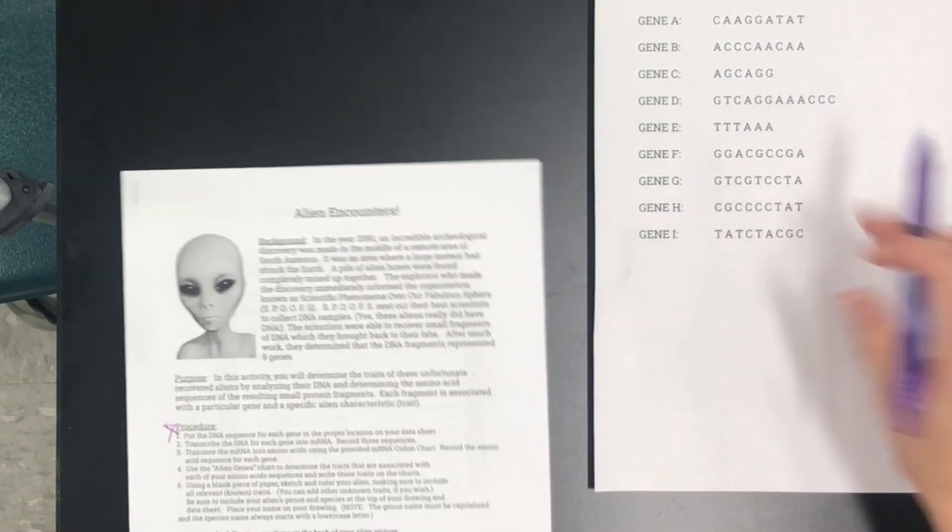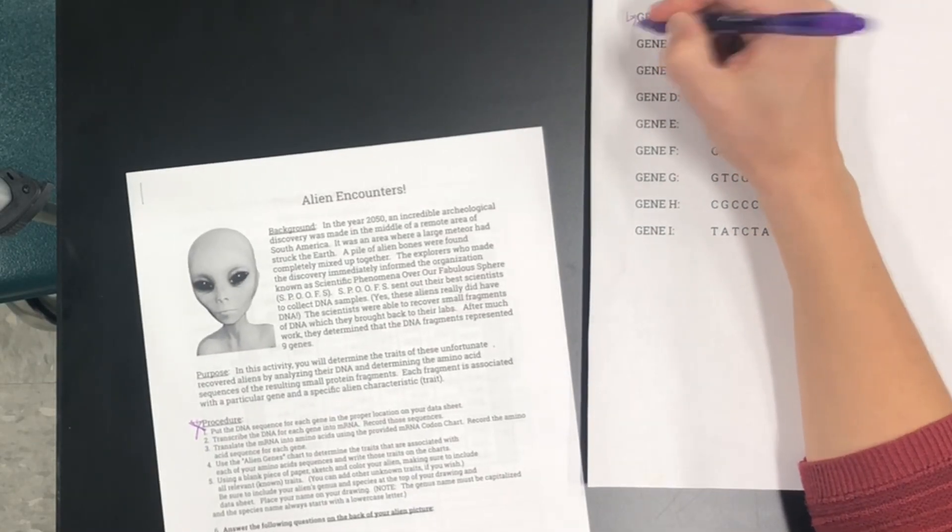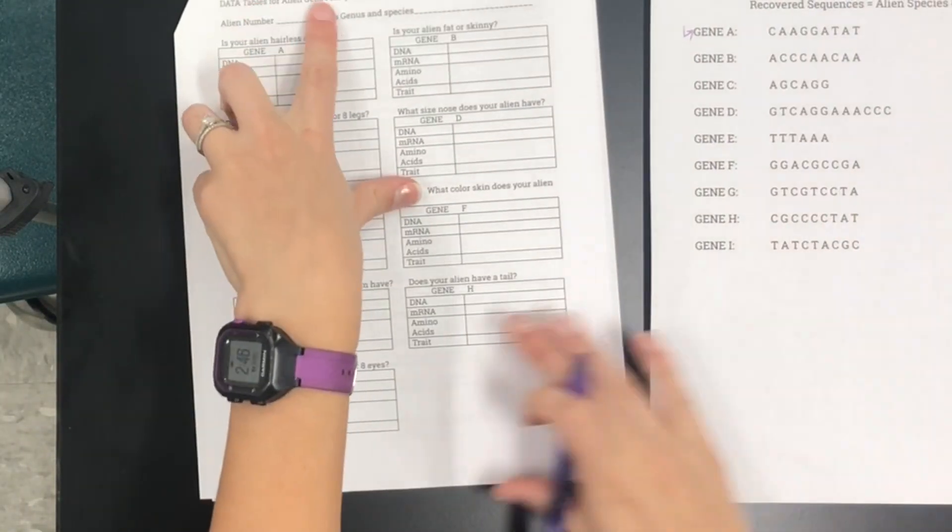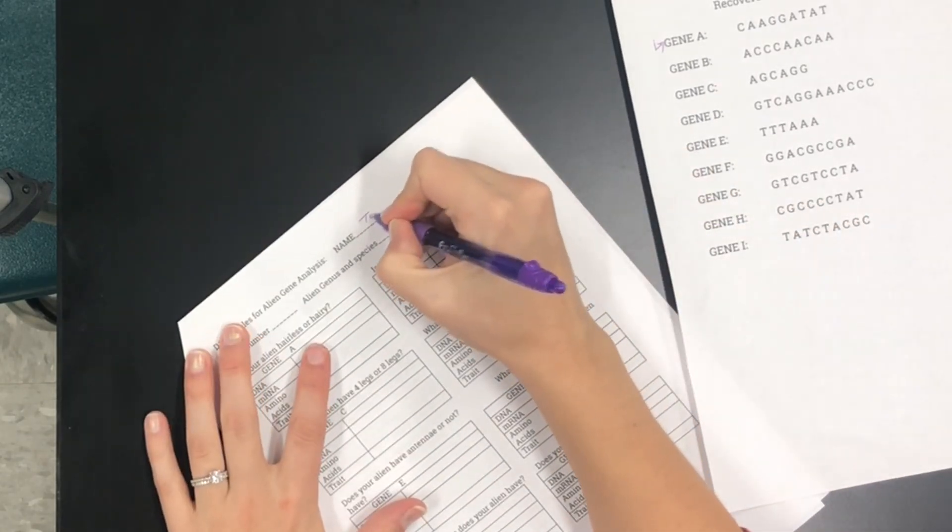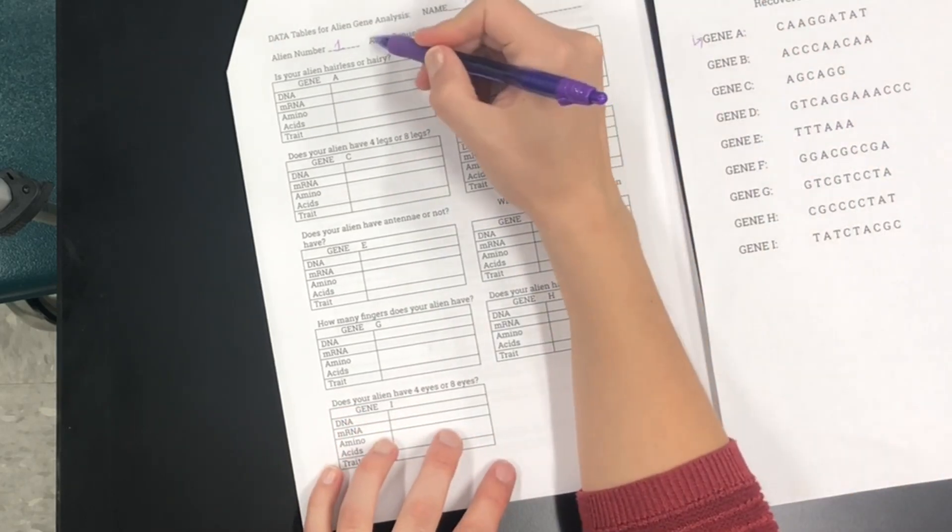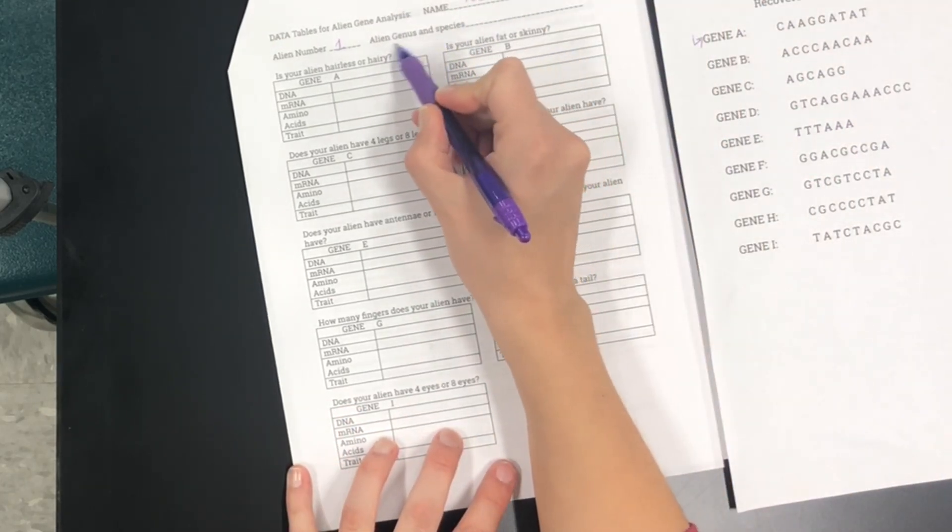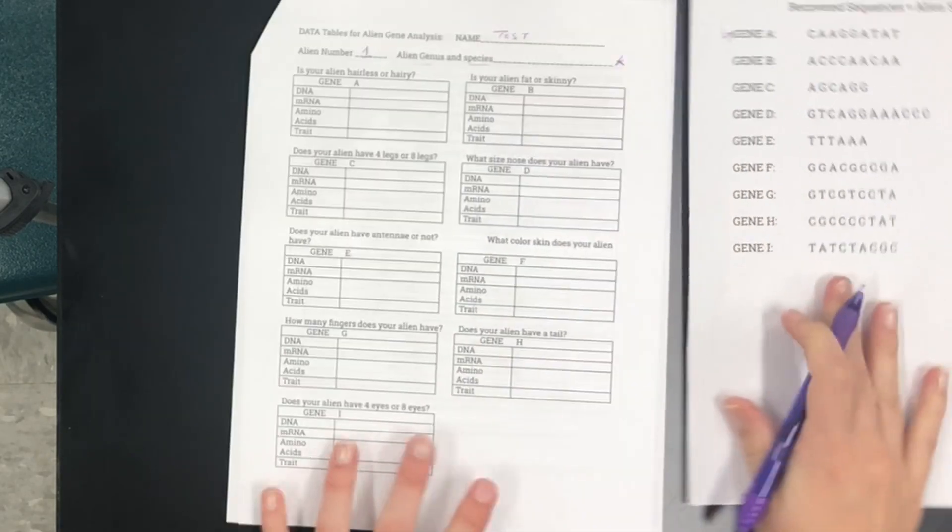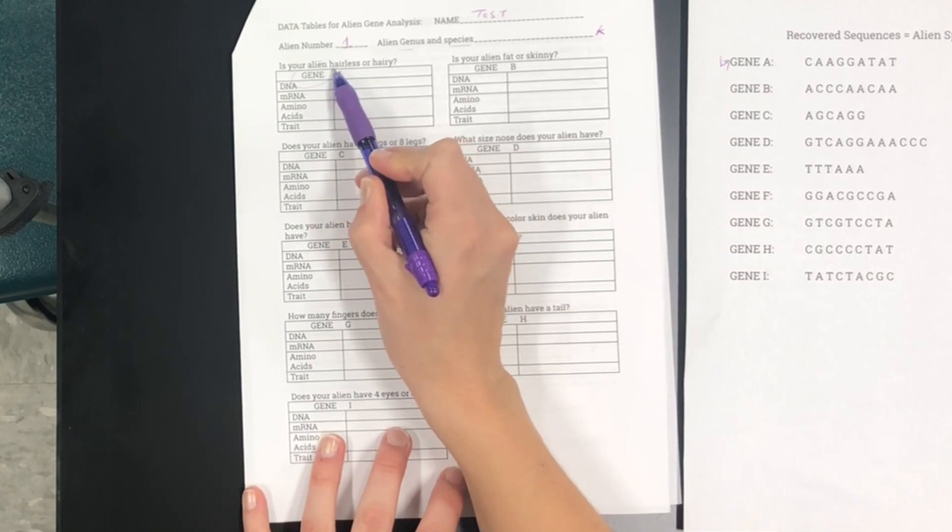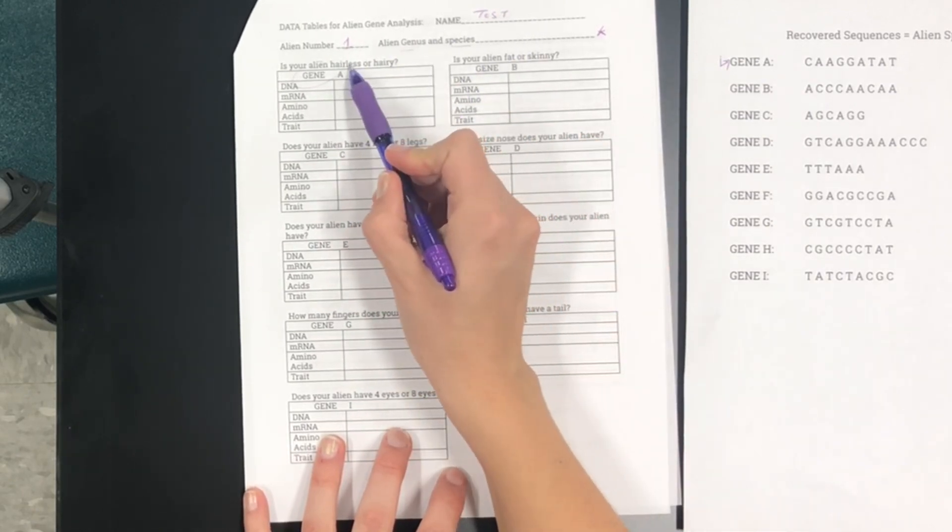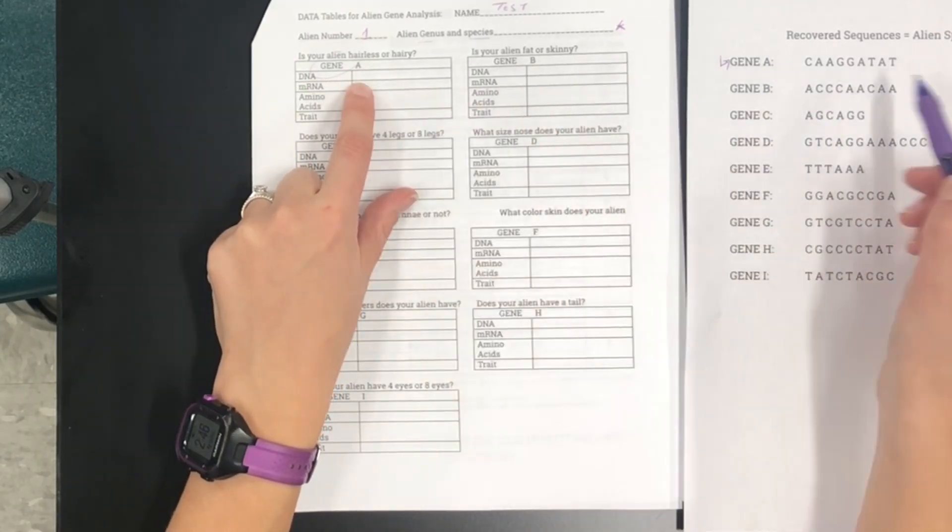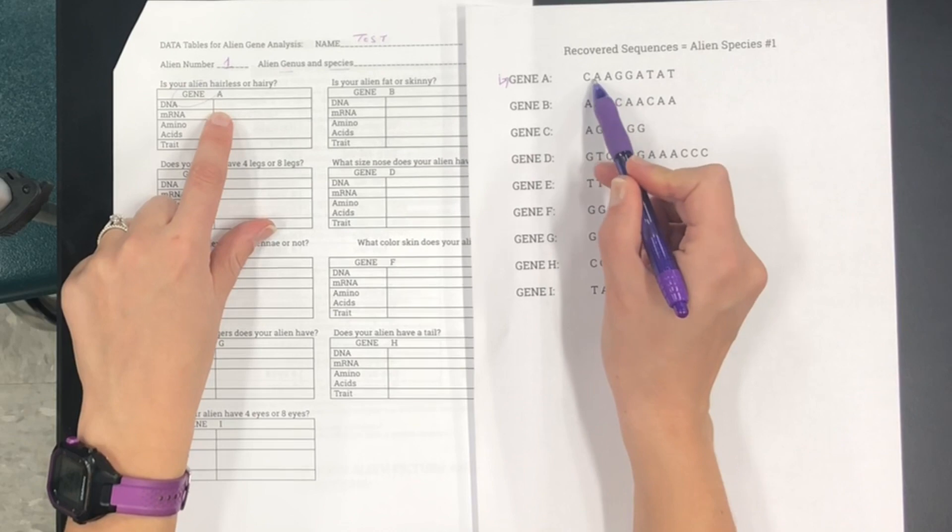So in the first step you're gonna look at your first gene. So we'll start with gene A. If you flip to this page that says data tables for alien gene analysis you can put your name up here. I'll just put test copy. This is alien number one and then you're gonna name your alien and you're gonna use scientific naming rules with a genus and species name but that we can save for later. So you don't have to do that right now. All right so for our first gene we're gonna determine if our alien has hair or if he is hairless. So in order to do that we'll start with our DNA. So in our DNA column or row we're gonna copy directly from our recovered alien species genes.